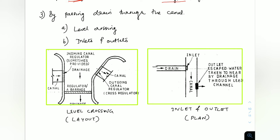In level crossing, a regulator is provided downstream of the drainage. If there is a high water level coming from the canal, the regulator is opened to regulate the discharge. There is also a regulator at the outlet of the canal. If there is a dry condition in the drainage, this regulator can be closed so that the canal water flows directly in that direction. So level crossing handles both high flood and dry country conditions in the drainage.